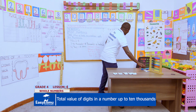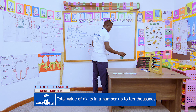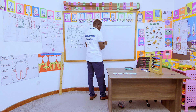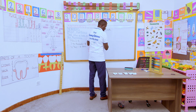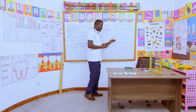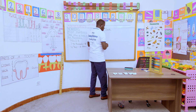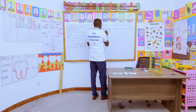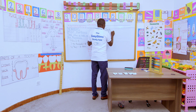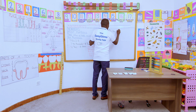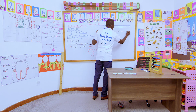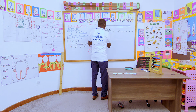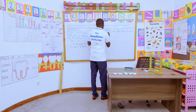Now we can look at a task that we can analyze together. The task: what is the total value of each digit in the following numbers?